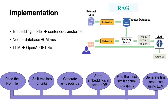For this implementation, we are going to use the sentence transformer as our embedding model, and then store the text data along with their high-dimensional vectors in a Milvus database. For generating the final response in natural language, we use the OpenAI GPT-4o model. So let's see the implementation step by step.